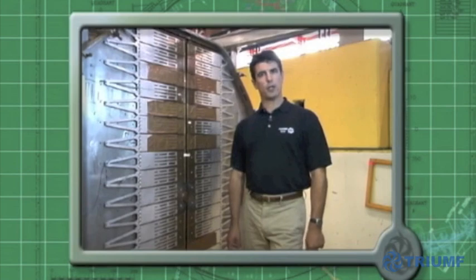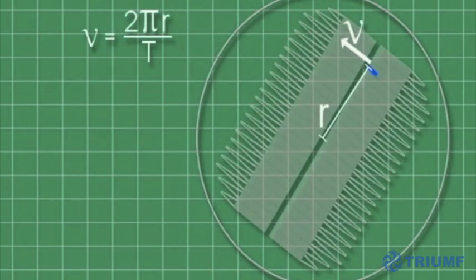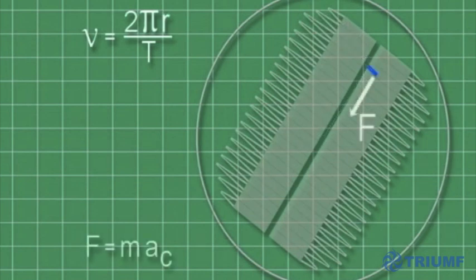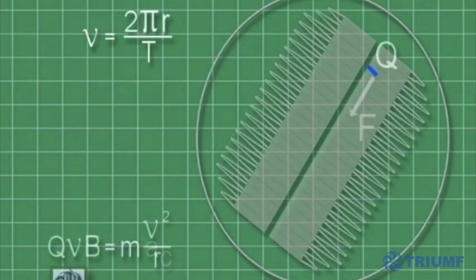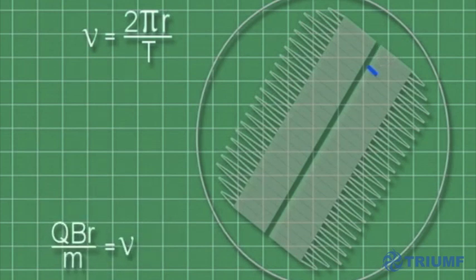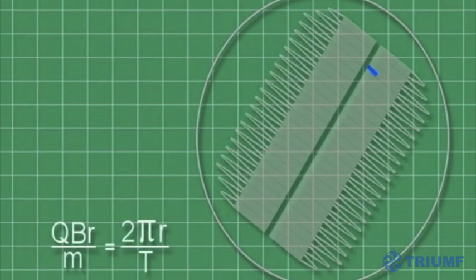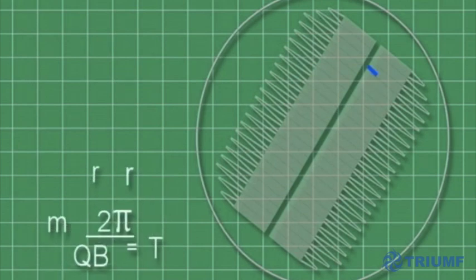There is another way to look at this, and instead of using numbers, let's begin by using only the symbols. The speed of the ion is related to the circumference and the orbital period, while the magnetic force is equal to the ion mass times its centripetal acceleration. By rearranging the formula, we see that the orbital period depends only on the ion mass and the cyclotron's magnetic field, and not on the velocity. This is known as the cyclotron principle.